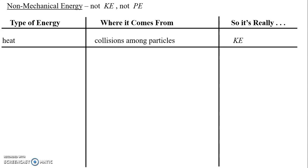If we think about a system of gas particles where one part has particles moving very fast — meaning high temperature — and somewhere else they're moving slowly — meaning low temperature — when these particles collide, there's a transfer of energy. The fast-moving particles collide with the slow-moving ones and give up some of their energy. That flow of energy is what we call heat. It's happening at a microscopic level, so it's a non-mechanical form of energy, unlike large-scale object motion which is regular kinetic energy.